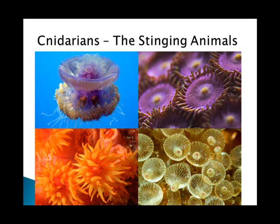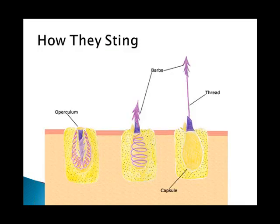The digestive cavity of cnidarians is very simple — it's sac-like. It has two layers of tissue: the epidermis, the outside layer, and the gastrodermis, the layer that lines the digestive cavity. One characteristic of cnidarians is that they use nematocysts, which discharge similar to a harpoon. This harpoon works whether the jellyfish is alive or dead — you touch the trigger cell, the barbs come out, and they inject the venom.